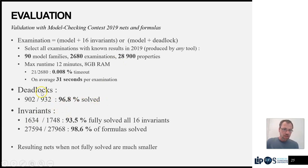So for deadlocks, we were able to solve almost 97% of the deadlock problems, and for invariants, 93% of the examinations were fully solved. This means essentially we reach a resulting net which is empty, and all the properties have a true or false verdict. So 6.5% of the problems end up as smaller problems with less properties that can be passed to another tool.